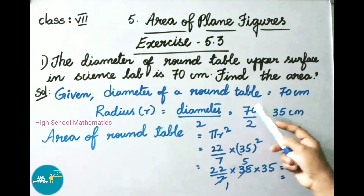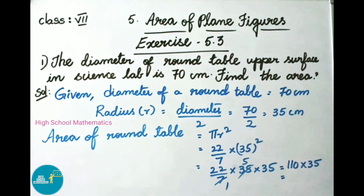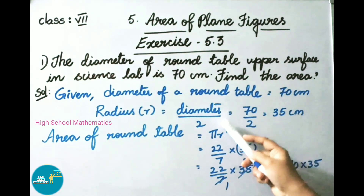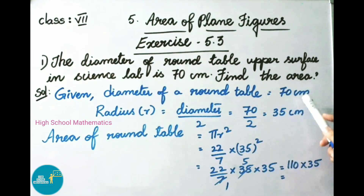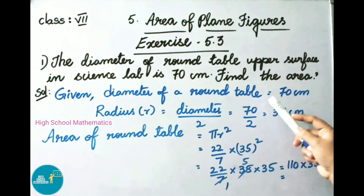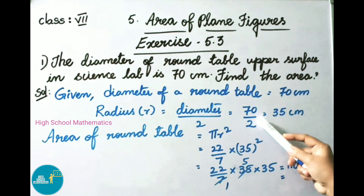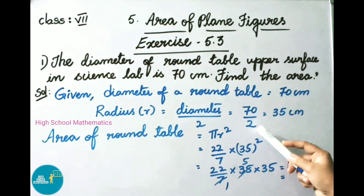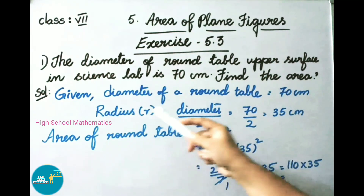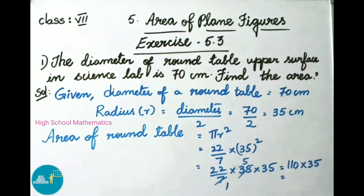Given: diameter of round table is 70 cm. We have the formula radius R equals diameter divided by 2. That equals 70 divided by 2, which is 35. Therefore, the radius of the round table is 35 cm.